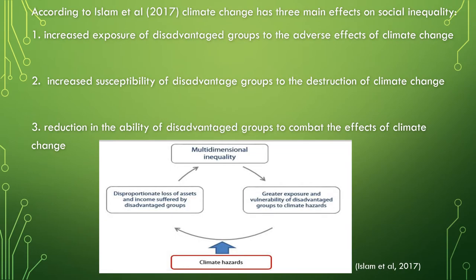Climate change affects everyone, but the way in which it affects everyone is not the same. Currently we're experiencing heat waves across America. Persons who have resources and the finances to combat the heat wave will not feel the effects as severely as compared to someone who doesn't. Something as simple as owning an AC unit to combat the heat wave exposes social inequality, as disadvantaged groups don't have the resources or finances to afford one.